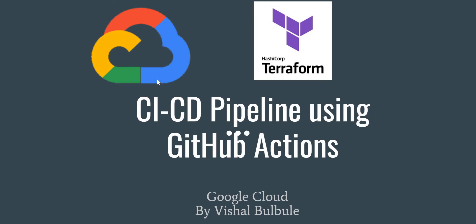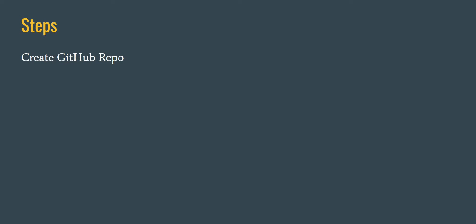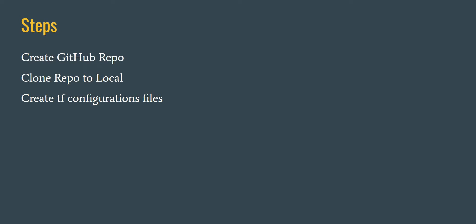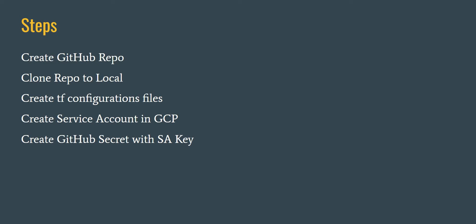I will walk you through the steps we are going to cover in this video. First, we will create a GitHub repository to store our Terraform configuration files. Then we will clone that repo to our local environment. In VS Code, we will create a Terraform configuration file — a sample example for creating a GCS bucket or virtual machine. Then we will create a service account, download the service account key, and store it as a GitHub secret so it won't be visible publicly.